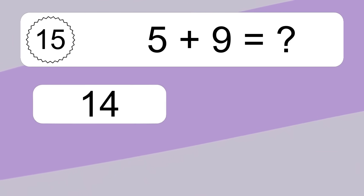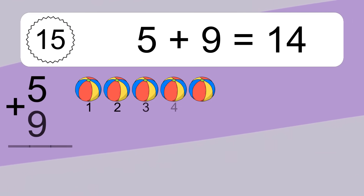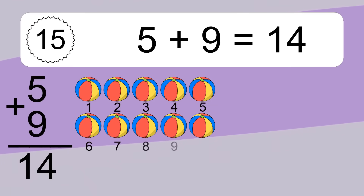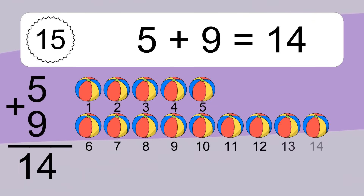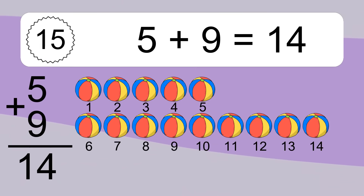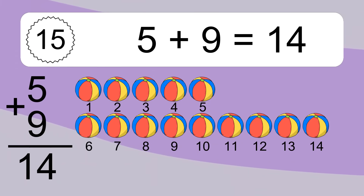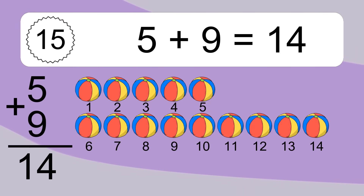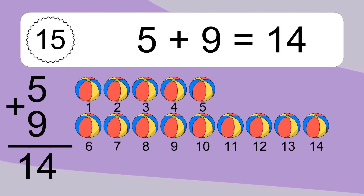5 plus 9 equals what? 5 plus 9 equals 14. Let's count it: 1, 2, 3, 4, 5, 6, 7, 8, 9, 10, 11, 12, 13, 14.